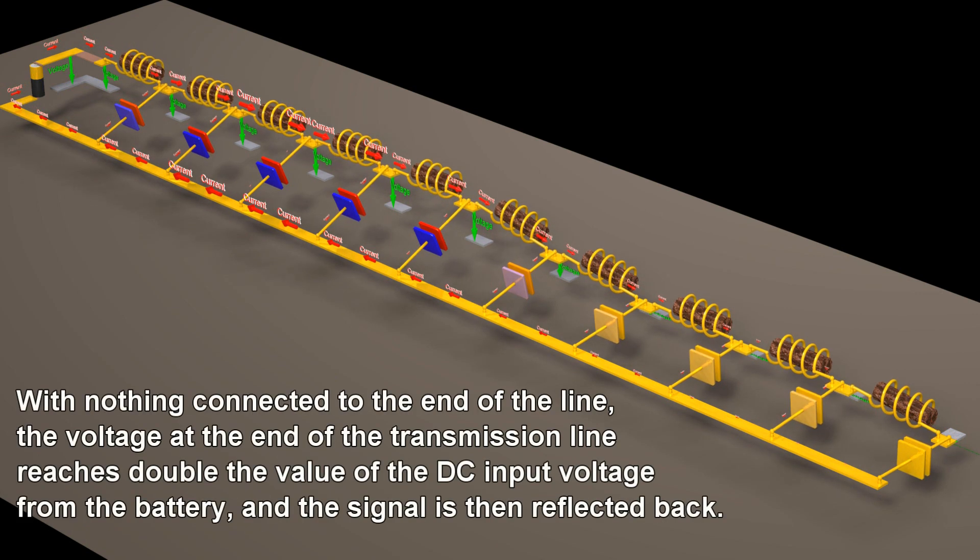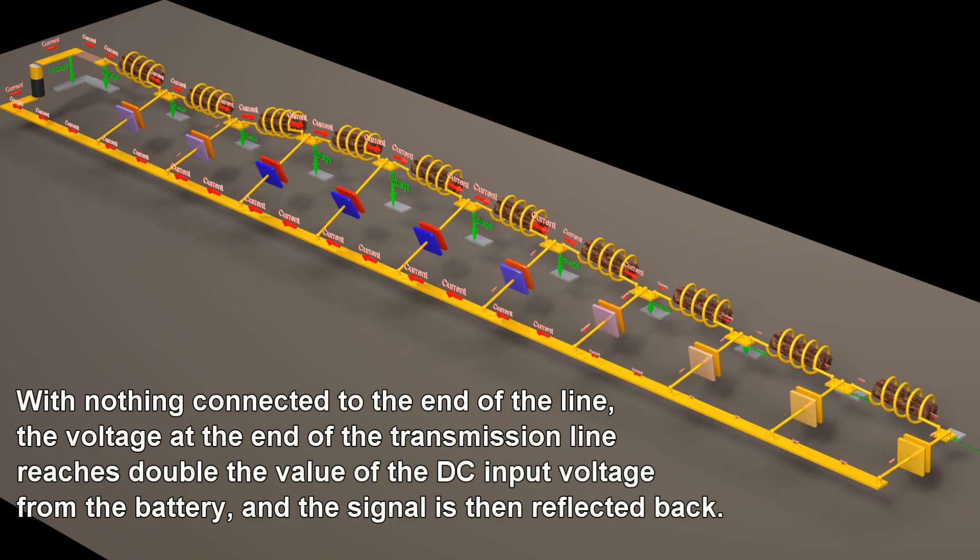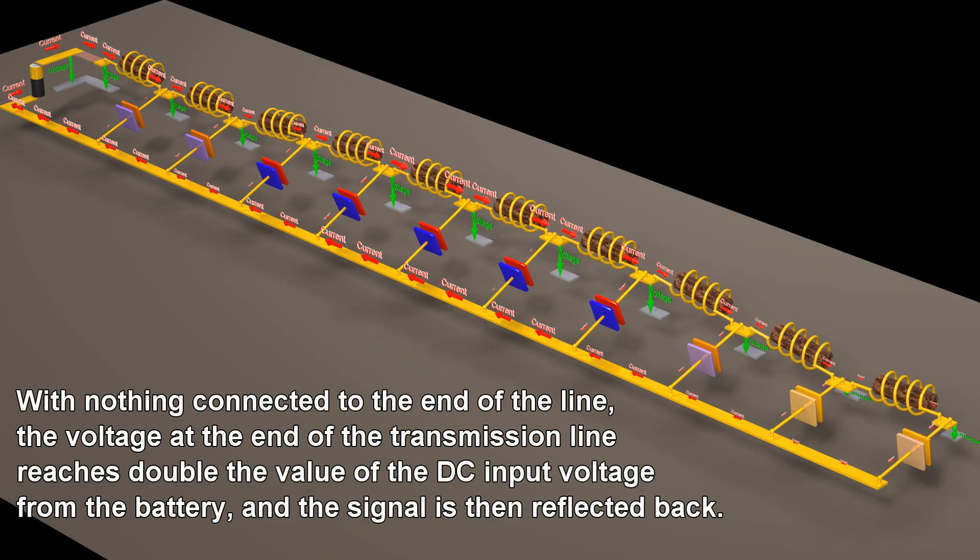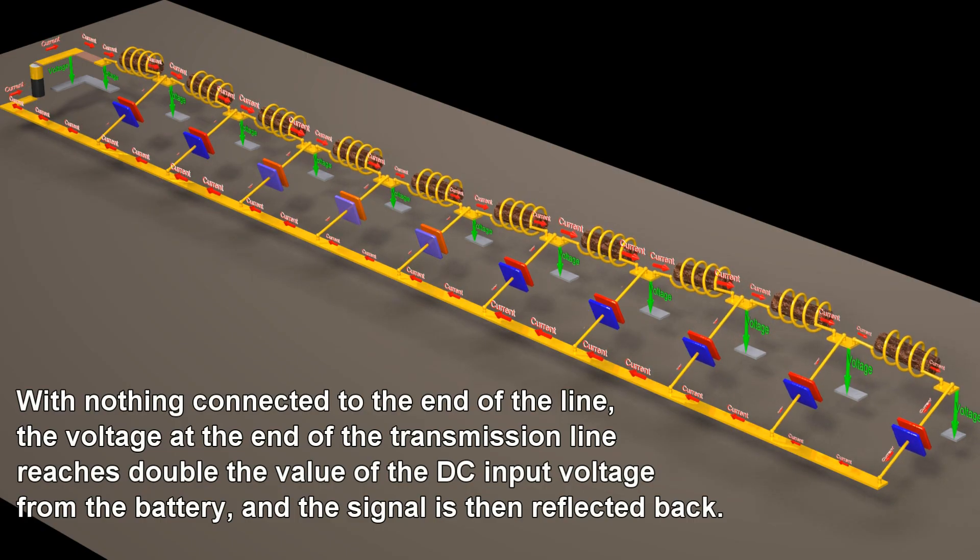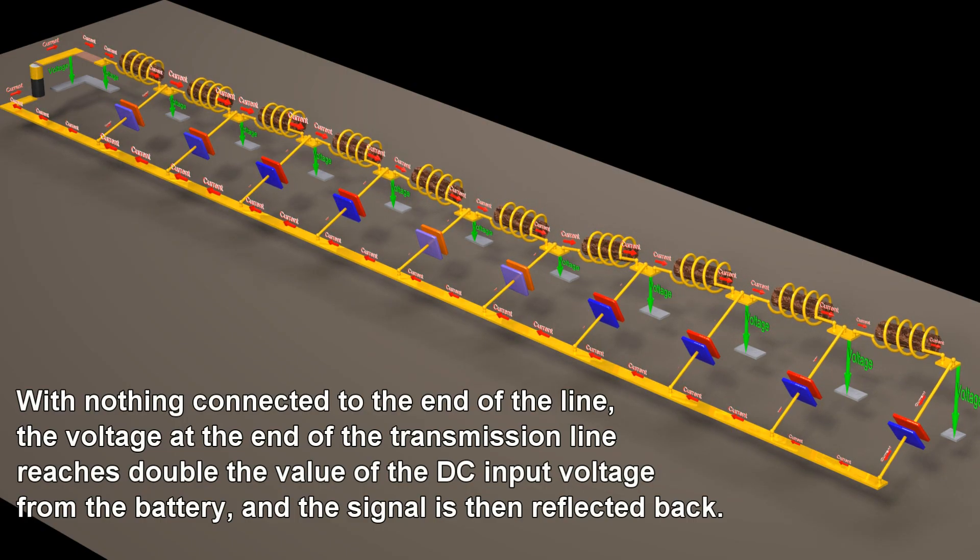With nothing connected to the end of the line, the voltage at the end of the transmission line reaches double the value of the DC input voltage from the battery, and the signal is then reflected back.